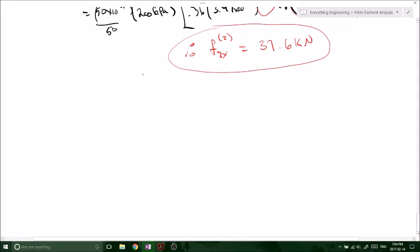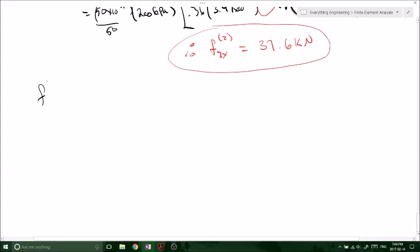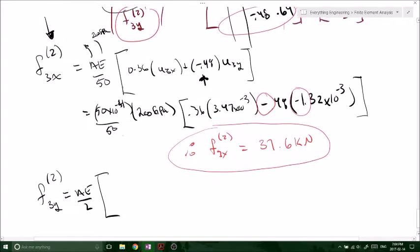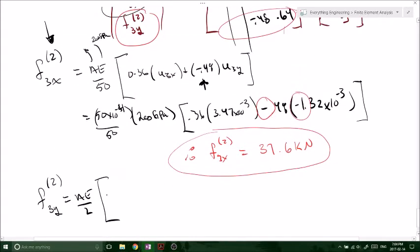I mean, you're probably pretty bored with this by now. I know it's super easy. You can fast forward if you want, but I'm going to write out every step. Remember, member 2, F3Y equals AE over L. Now we've got, where are we? Negative 0.48 and 0.64. So negative 0.48, remember, because now we're looking at the bottom row, the bottom row there.